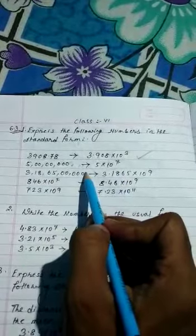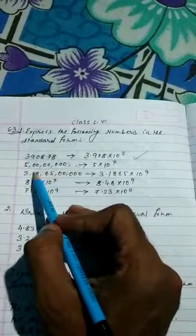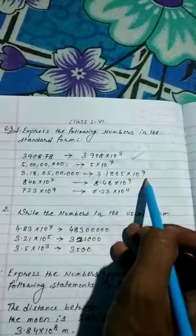Next, again the point is here. The point shifts 1, 2, 3, 4, 5, 6, 7, 8, 9 places. So this number becomes 10 to the power 9.